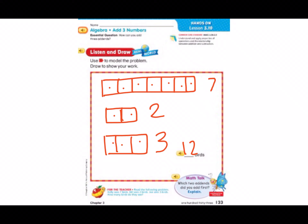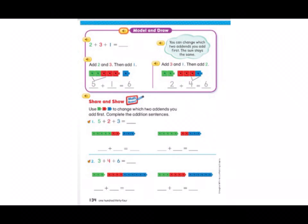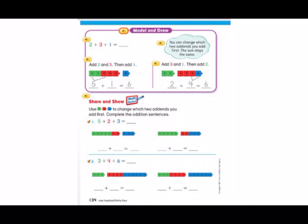Let's look at page 134. Model and draw: two plus three plus one. You can change which two addends you add first — the sum stays the same. So what we're going to do is add two and three to get five, and then add one. So our new problem says five plus one equals six. Let's look at another way we could add. Add three and one — you would get four, then add two. So your new problem would say two plus four equals six. Our sum stayed the same no matter how we combined two of our three addends to make a simpler math problem.